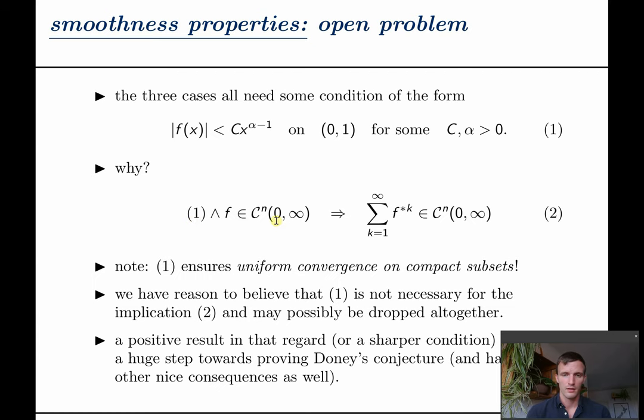All three cases needed some condition of this type and the reason for that is that this condition together with f being in C^n implies that this sum is in C^n as it ensures uniform convergence on compact subsets of all n derivatives. However we believe or at least I do that this condition may be dropped.